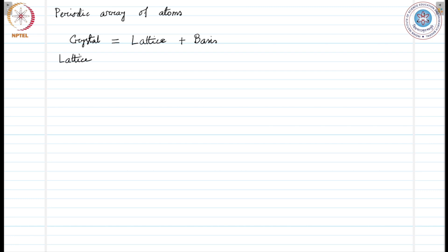An ideal crystal is constructed by infinite repetition of identical group of atoms. Such a group is called basis and this basis is attached to a set of points and that set of points is called lattice, together they generate a crystal.